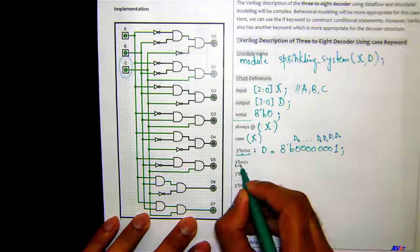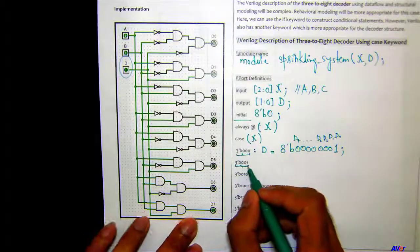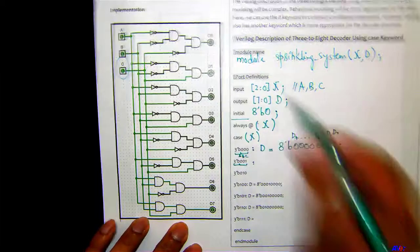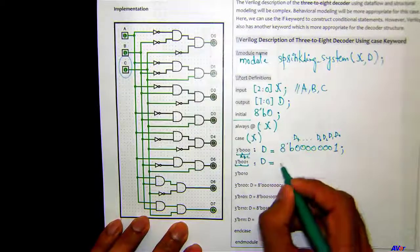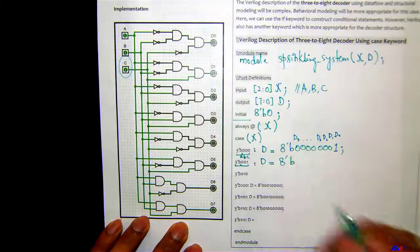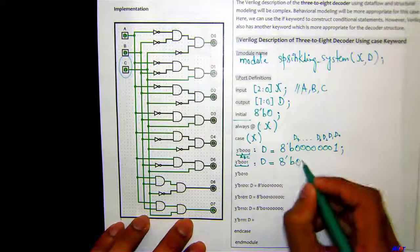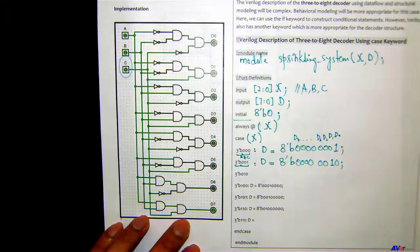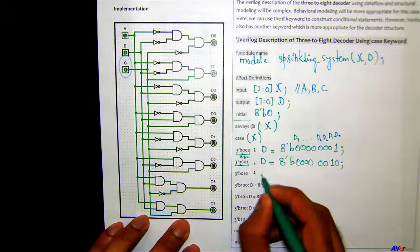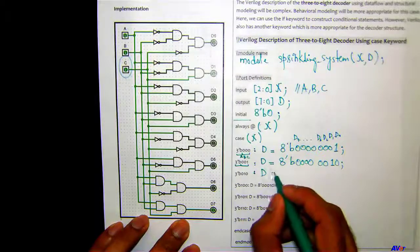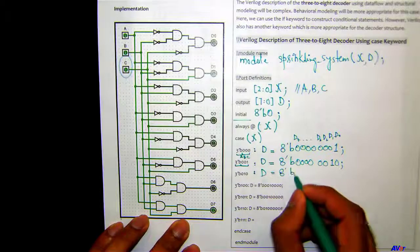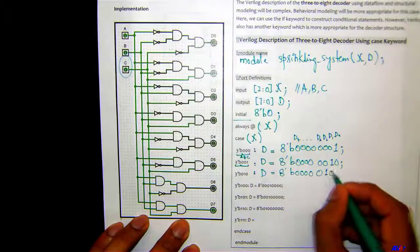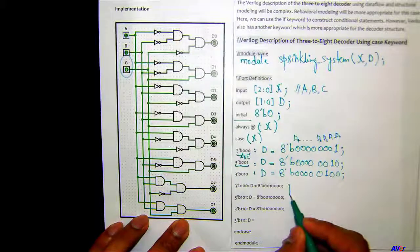Similarly, if the three bits are 0-0-1, meaning A is zero, B is zero, C is one — which we declared as X — then sprinkler D1 should be working, so D equals 8'b00000010. And for 0-1-0, which is a binary code of two, sprinkler D2 is working, so D equals 8'b00000100.